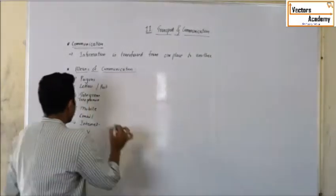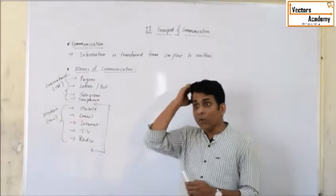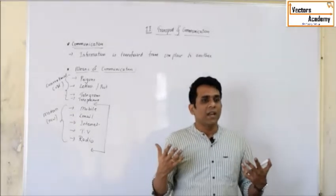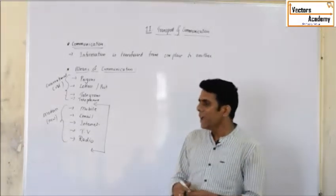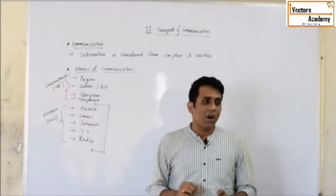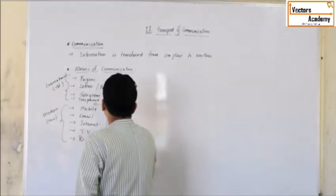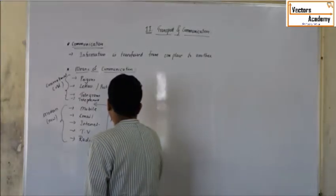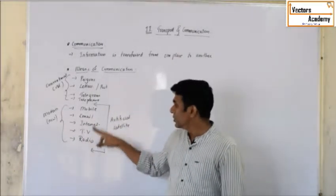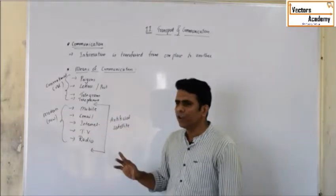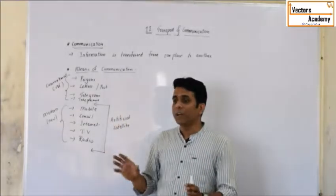For these new means of communication to work so well and reach messages faster, one of the reasons is the usage of artificial satellites. Artificial satellites which orbit around the earth play a very important role in modern means of communication — mobile, email, internet, TV, radio. In all of these, artificial satellites have a very big contribution in making sure that they are working properly and efficiently.